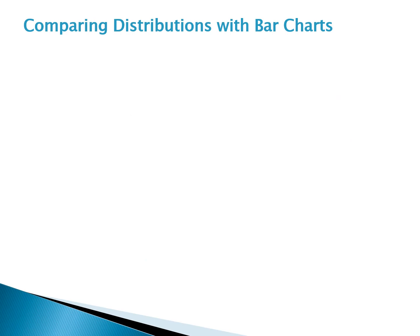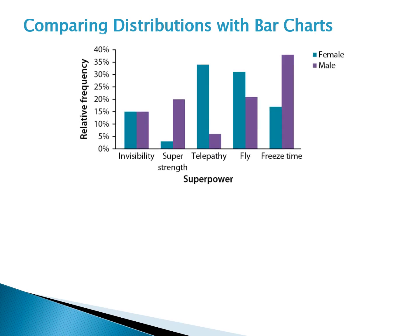Statistics is a real-world math class, and we want to give real-world answers when asked to compare distributions with bar charts. In this display, a number of males and females were asked which superpower they would prefer to have. A couple of things jump out: a lot more females than males chose telepathy, while males are more likely to choose freeze time and super strength. For invisibility, we see the exact same percentages, and for flying there's a slight difference.